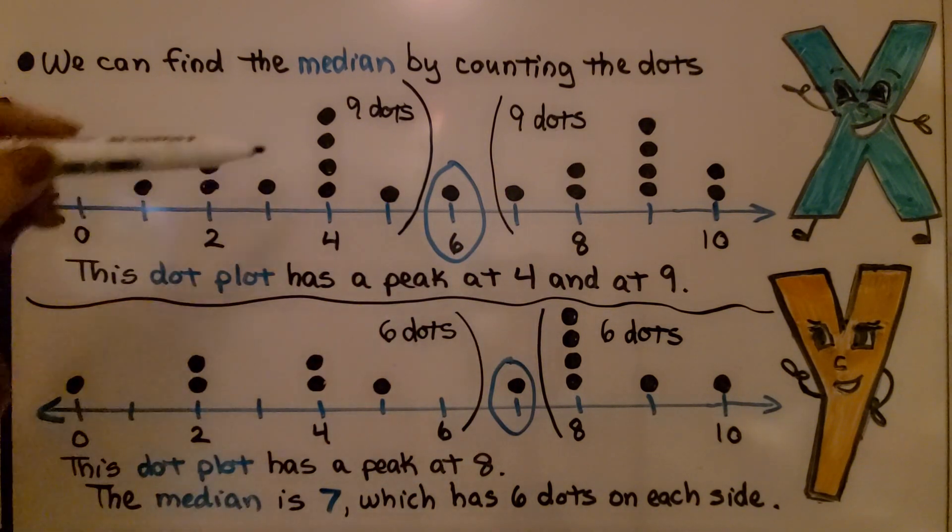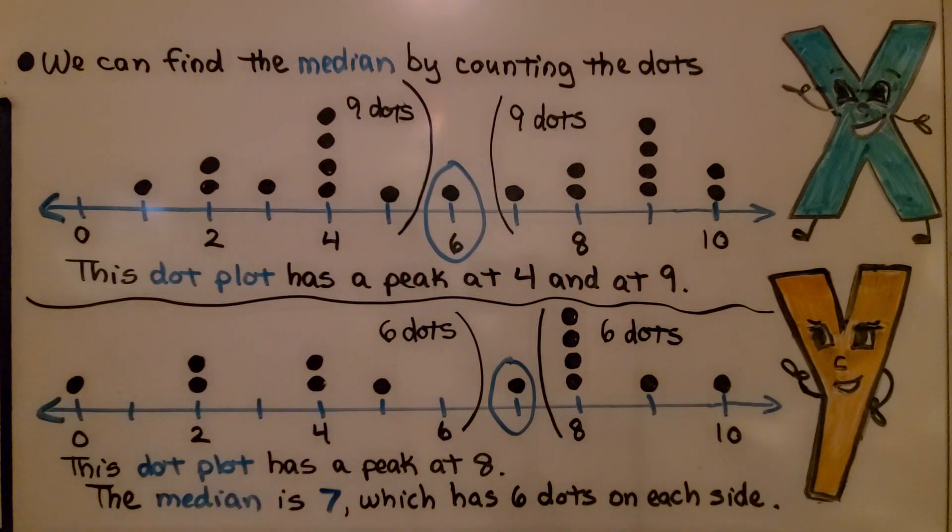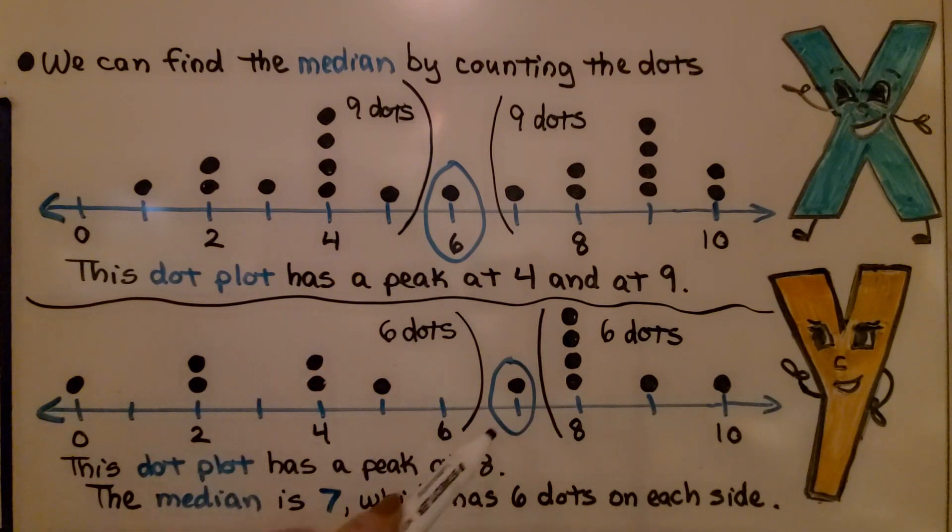This dot plot has a peak at four and at nine. Now, this dot plot has a peak at eight. And the median is seven, even though we don't see a seven listed here.